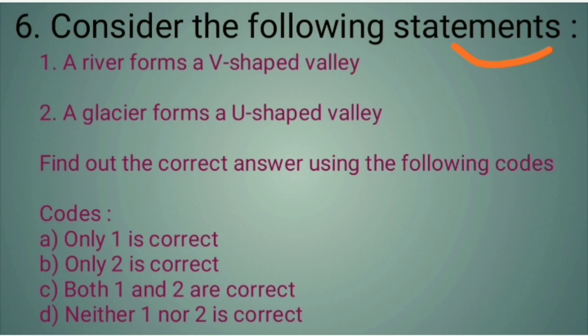Question 6: Consider the following statements. Statement 1: A river forms a V-shaped valley. Statement 2: A glacier forms a U-shaped valley. Find out the correct answer using the codes. Option A: Only 1 is correct. Option B: Only 2 is correct. Option C: Both 1 and 2 are correct. Option D: Neither 1 nor 2 is correct. The answer is C. Both statements are correct. A river forms a V-shaped valley and a glacier forms a U-shaped valley.